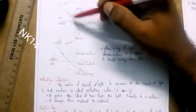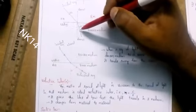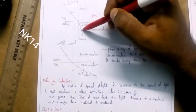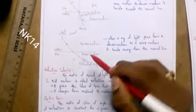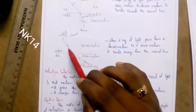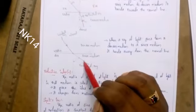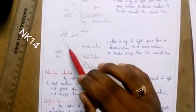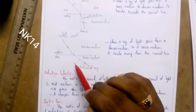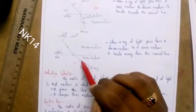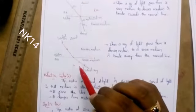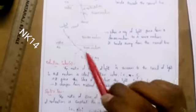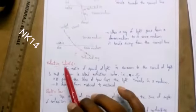To summarize: when light travels from rarer to denser, the refracted ray will be close to the normal. When light travels from denser to rarer — the opposite — the refracted ray will be far away from the normal line. This is important; don't get confused.